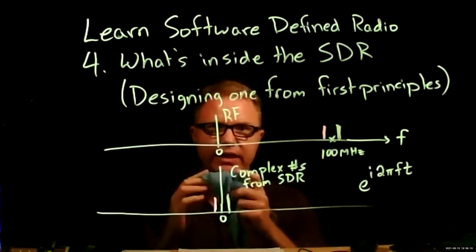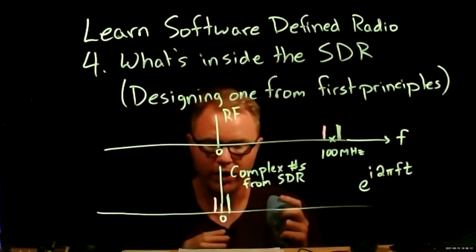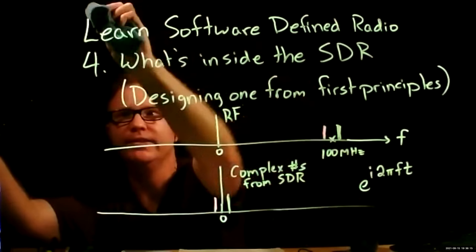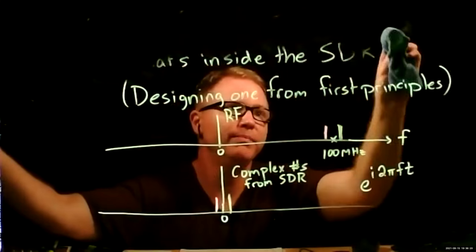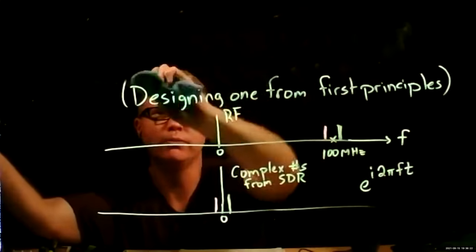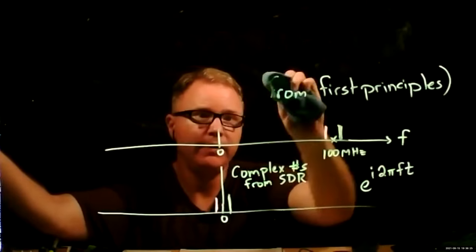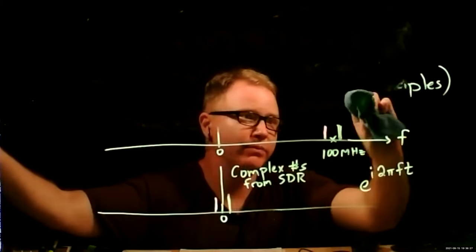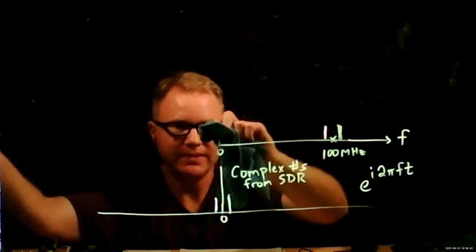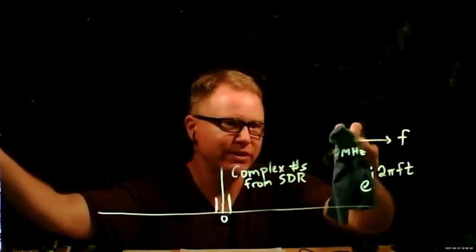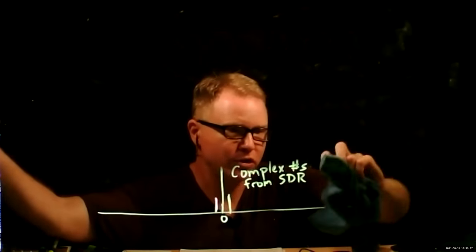Let's actually start designing how one might make that transformation. We're going to design a Software Defined Radio kind of from the ground up, at least in terms of the math operations it performs on the signal, in order to take a real radio frequency signal at some very high frequency and turn it into a complex series of numbers at a much lower frequency that captures information about what's going on around that high frequency.